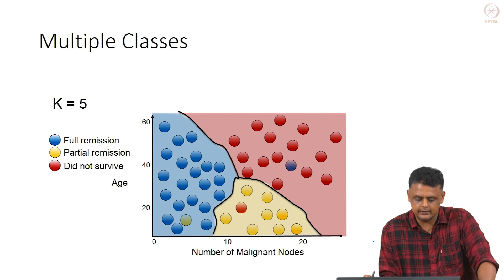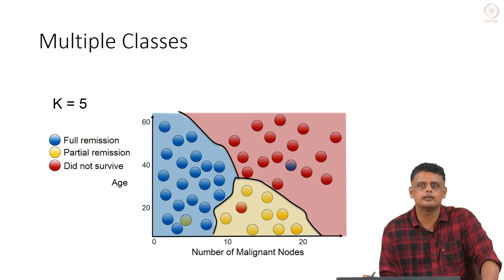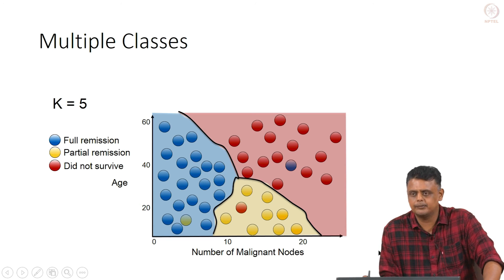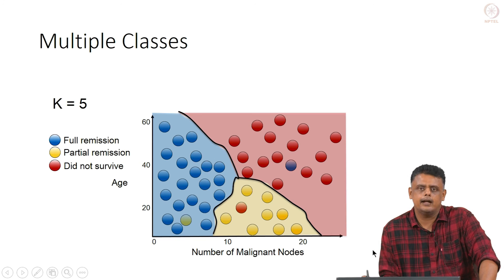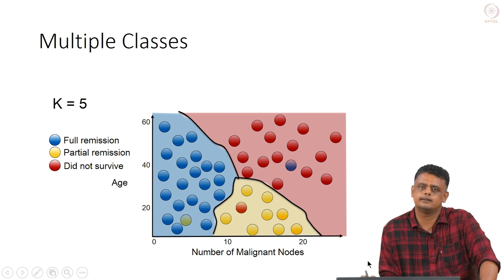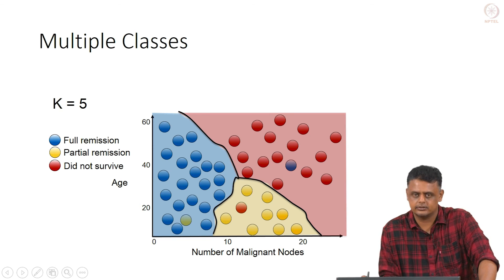We can also do multi-class classification using K nearest neighbours — it follows the same procedure, though ties can occur, so you vary K to reduce ties. To summarise: K nearest neighbours is one of the simpler machine learning algorithms that often works well depending on your data. You load the entire dataset with its features after splitting into training, validation, and testing. For a new incoming data point, you find the K nearest neighbours and do a majority vote among them to determine the class. We will look at other classification algorithms in the next few lectures.